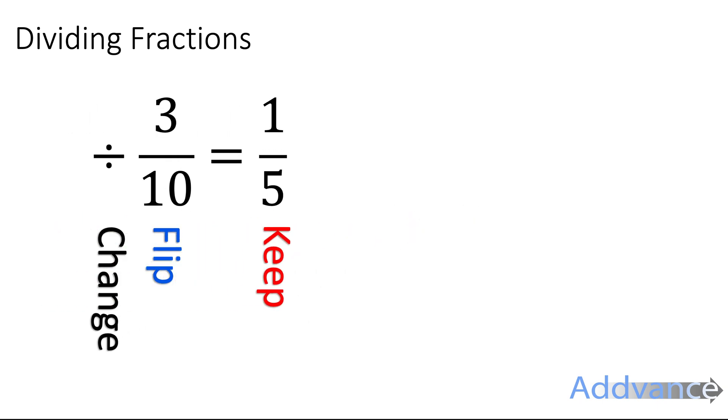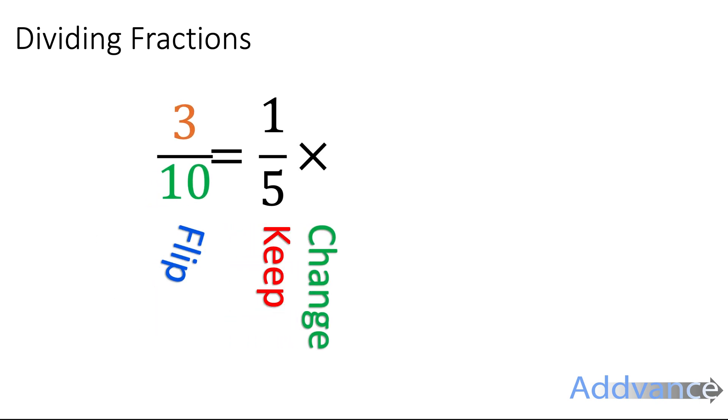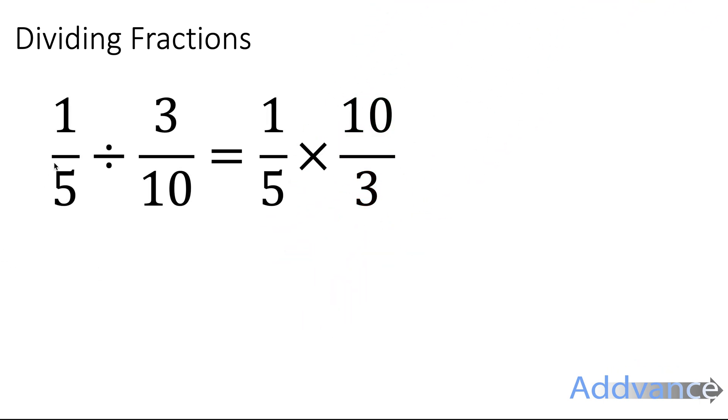We keep the first fraction the same, we change the divide to a times and we flip the other fraction upside down. So 1 fifth divided by 3 tenths is equal to 1 fifth times 10 thirds.